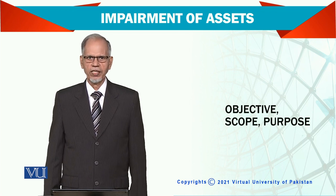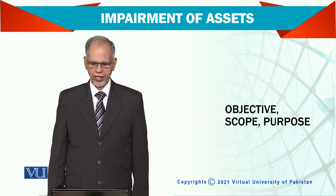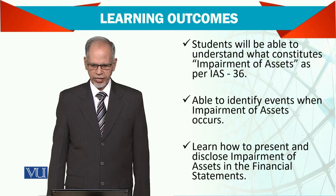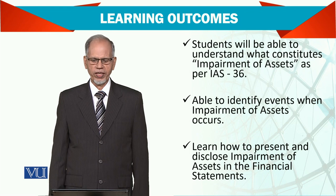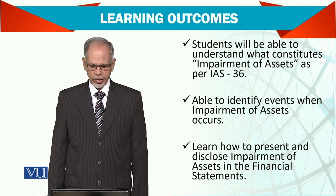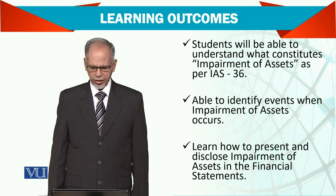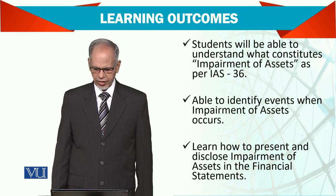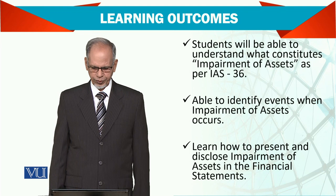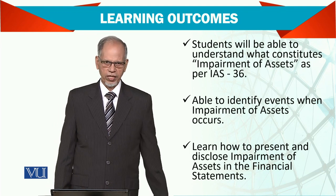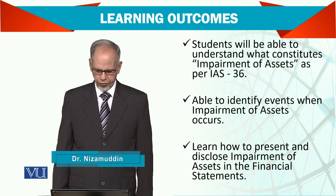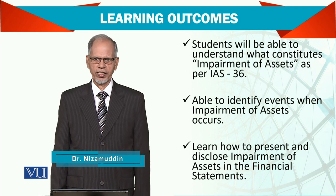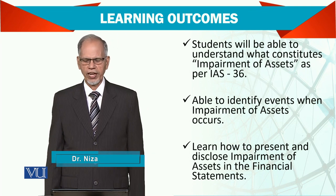Today, the topic is Impairment of Assets. First of all, we look into the objective learning outcomes. Students will be able to understand what constitutes impairment of assets as per IAS 36, and able to identify events when impairment of assets occurs — those can be internal and external. We will also learn how to present and disclose impairment of assets in Financial Statements, both in the Income Statement and Balance Sheet.